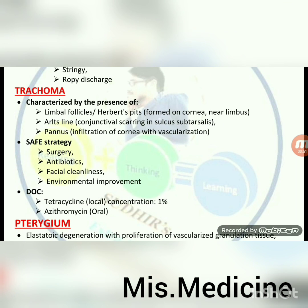Trachoma: characterized by the presence of limbal follicles; Herbert's pits formed on cornea near limbus; Arlt's line — conjunctival scarring in sulcus subtarsalis; pannus — infiltration of cornea with vascularization. SAFE strategies: Surgery, Antibiotics, Facial cleanliness, Environmental improvement. Drug of choice: tetracycline local 1% concentration and azithromycin orally.